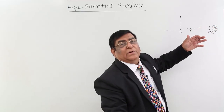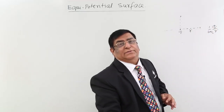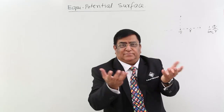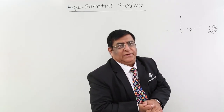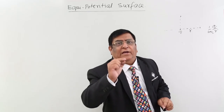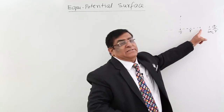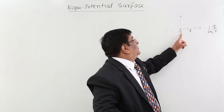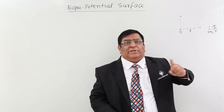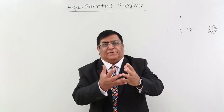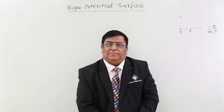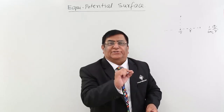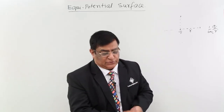Now what is the locus of all those points? Join up all those points and it will become a sphere. The surface of a sphere has every point at equal distance r, so if I place a charge q at the centre, then at every point of the surface the potential is the same.